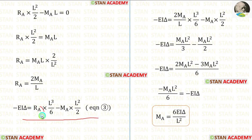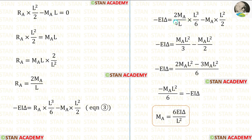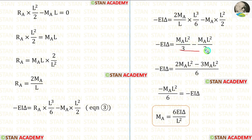In the third equation, instead of RA, let us apply 2MA/L. Let us eliminate L — here it will be square. Also, let us eliminate 2 — here it will be 3.